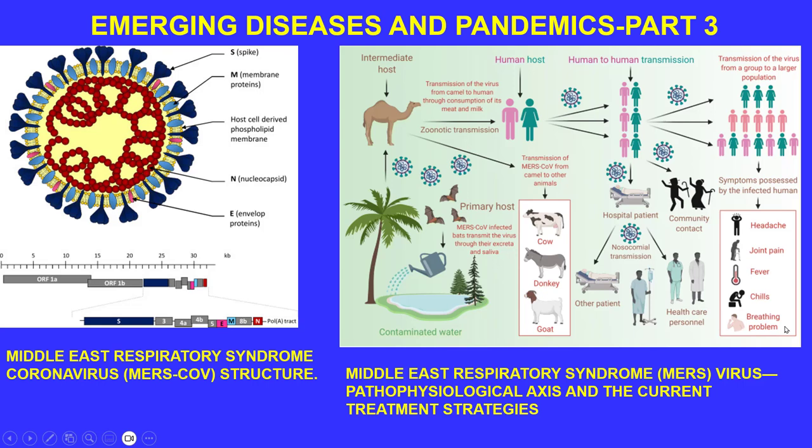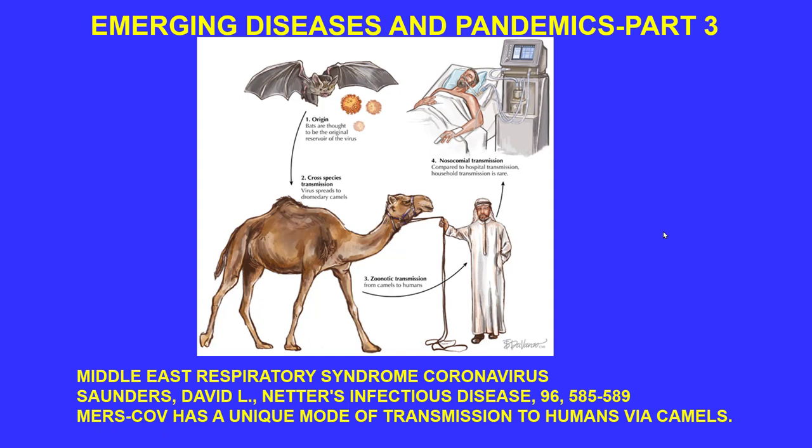Symptoms include headache, joint pain, fever, chills, and breathing problems. MERS-CoV has a unique mode of transmission to humans via camels. The bats are thought to be the original reservoir of the virus. There is cross-species contamination as the virus spreads to dromedary camels.